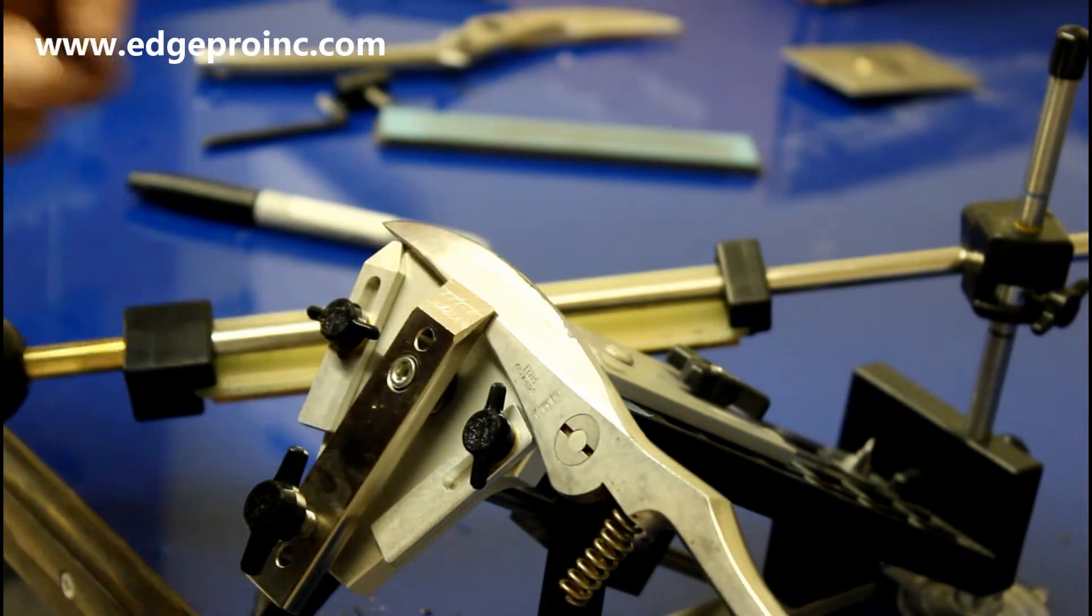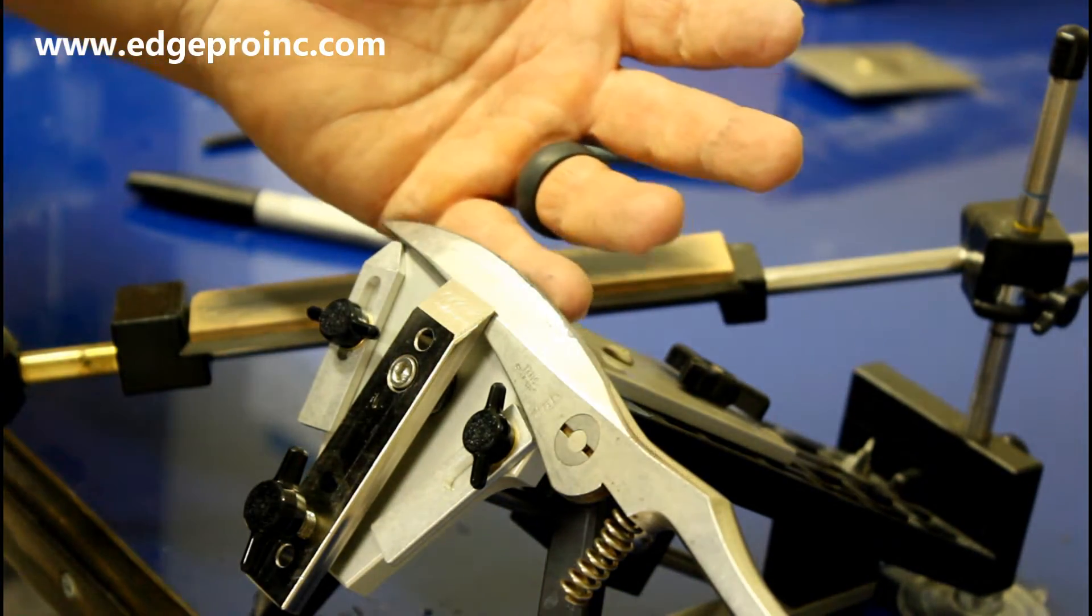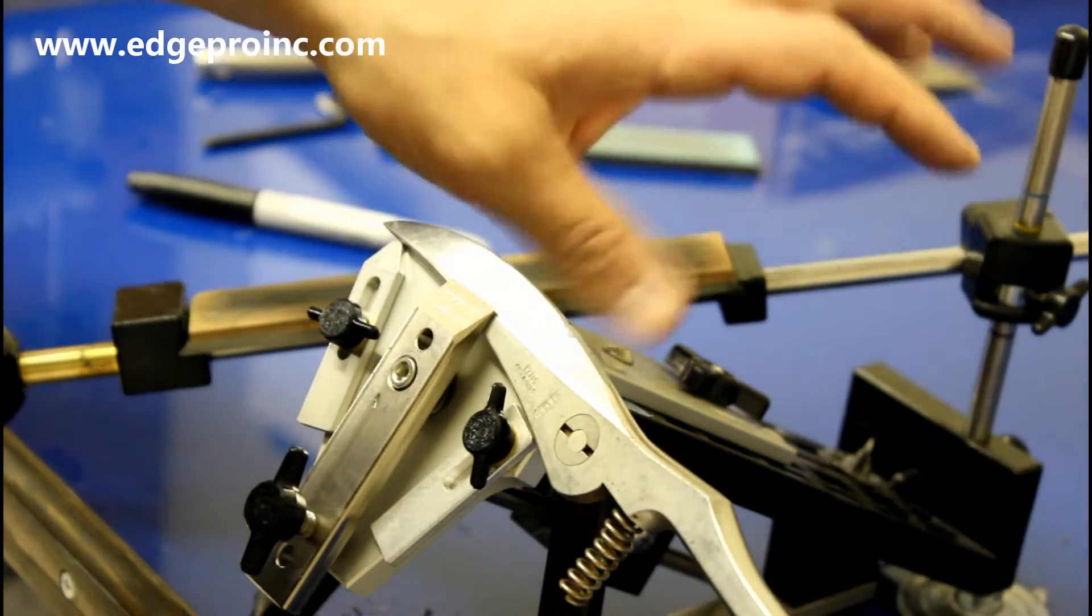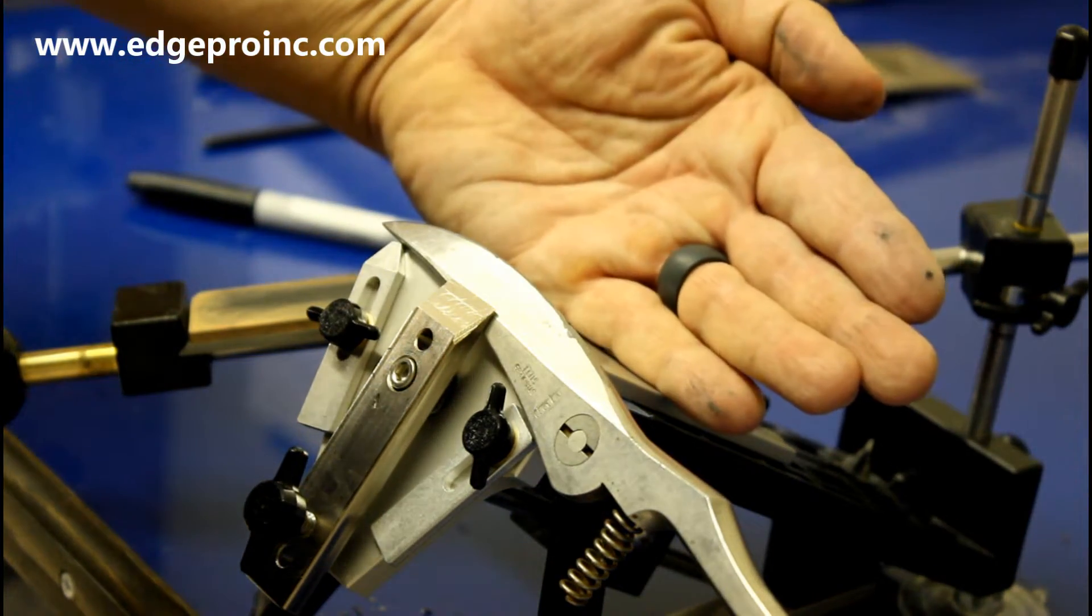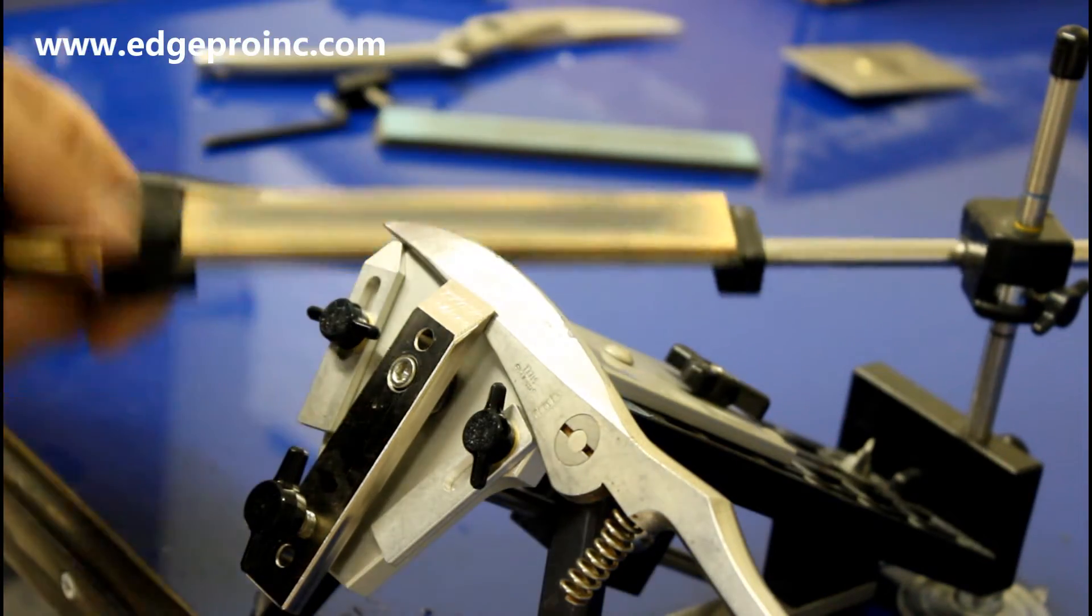Still got a ways to go. I can tell I'm going to need to remove a lot of metal from this thing because man, these things were really dull. Even though it looks like it's removing metal all the way up to the edge, the inside corner of this thing is rounded over pretty badly.